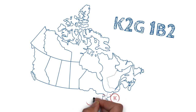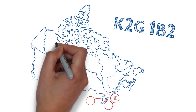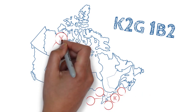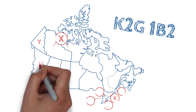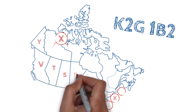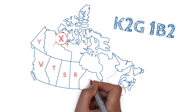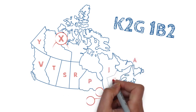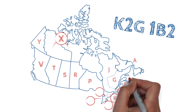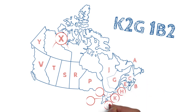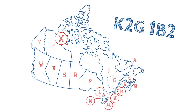The first letter of any Canadian postal code identifies the area of Canada to which the mail is going. This represents a specific province, a section of a province, a territory, or a major metropolitan area. Ontario and Quebec are the only provinces that have five and three postal districts, respectively, because of their dense population.